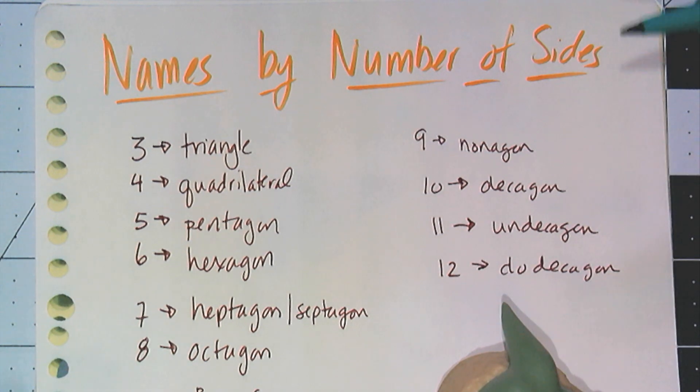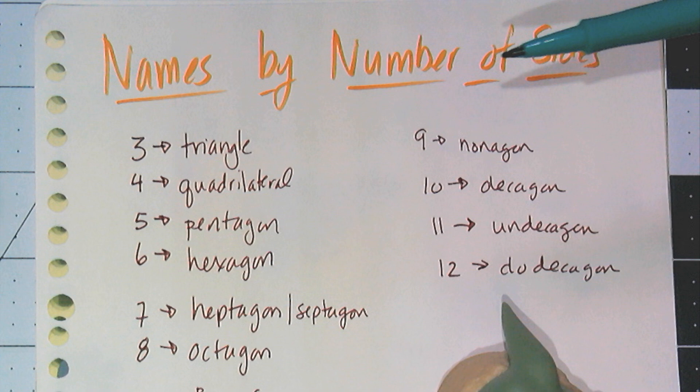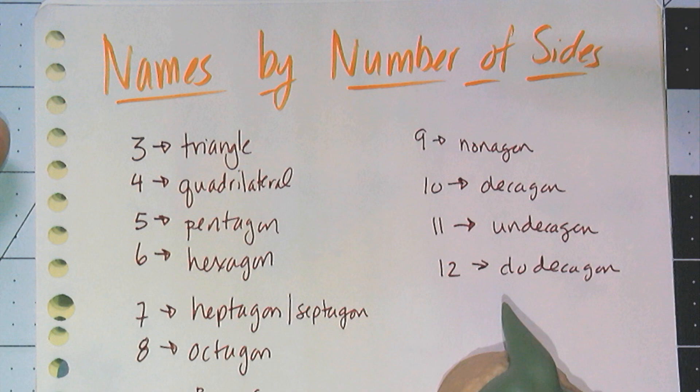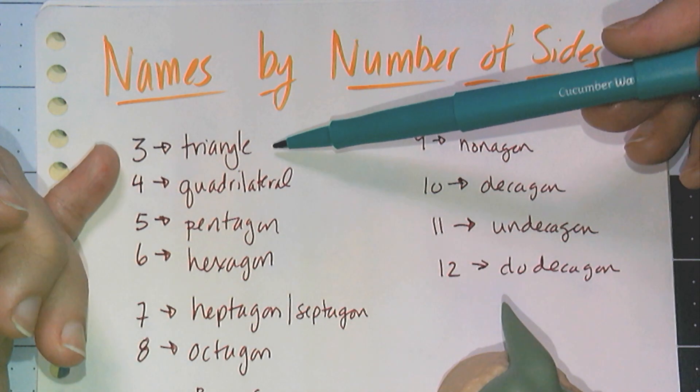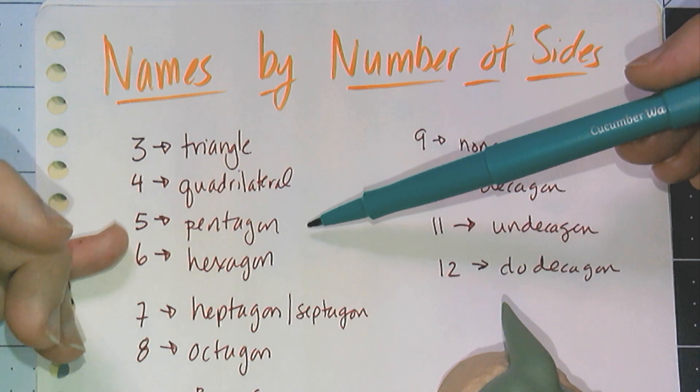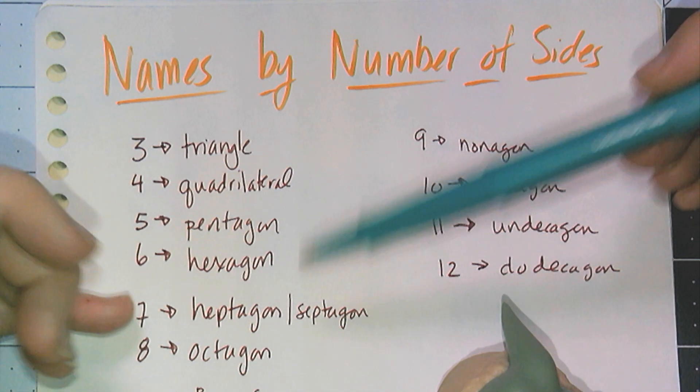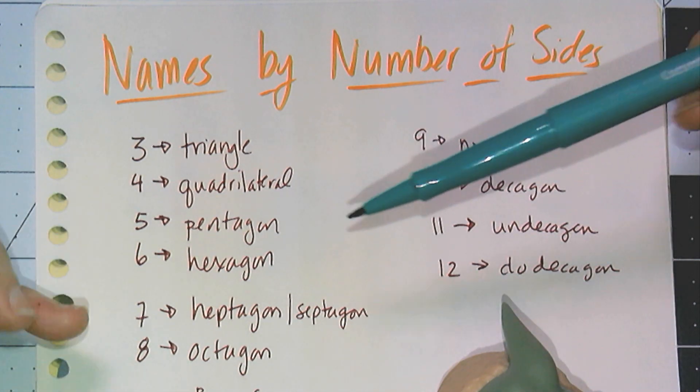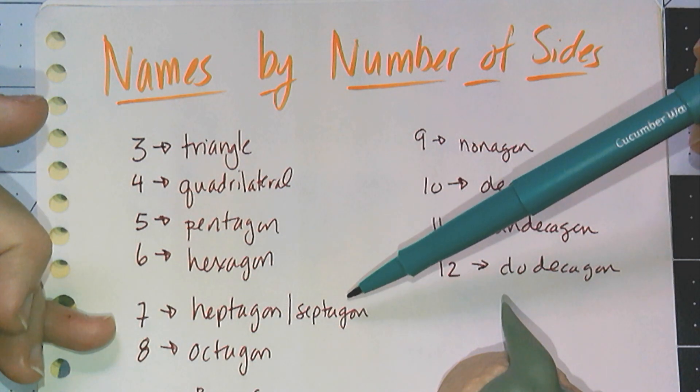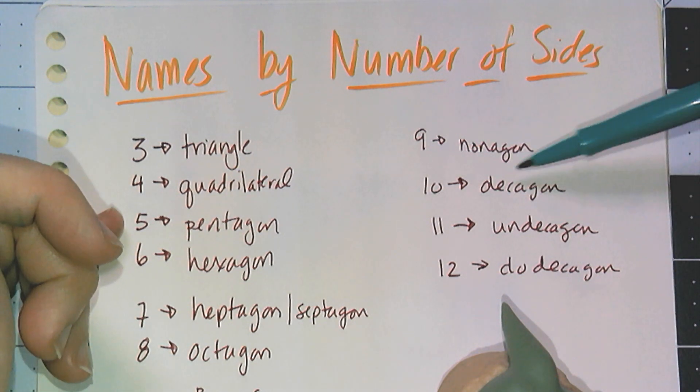The word polygon is very vague. It can be any number of shapes, so there are special names based on the number of sides which we need to use. Everyone should be familiar with the triangle and the quadrilateral. Most of you know about the pentagon and the hexagon. Seven sides is where people don't remember the names, and you'll see it either as a heptagon or a septagon. Eight, octagon. Nine, nonagon. Ten, decagon.